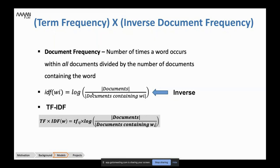Why use log? If all our papers contain the word 'gene' and we have one million documents, then number of documents divided by number of documents containing 'gene' equals one million divided by one million, which is 1. And log(1) = 0 — so the importance of this word would be zero. Finally, we multiply TF by IDF to capture the importance of a term within a document and also across all documents in the dataset.